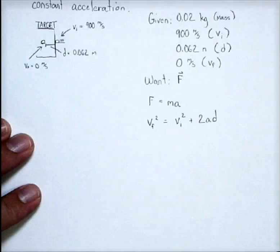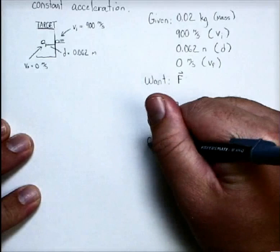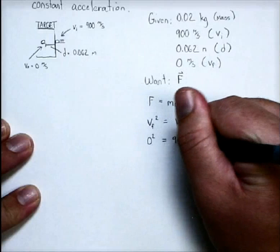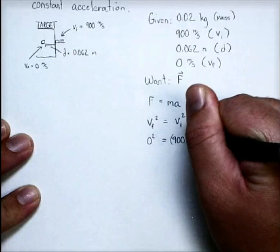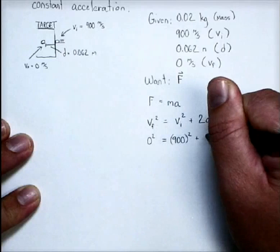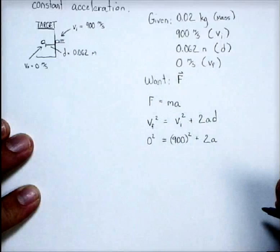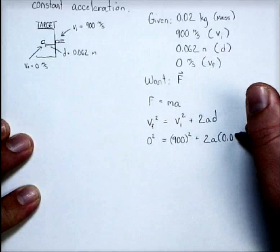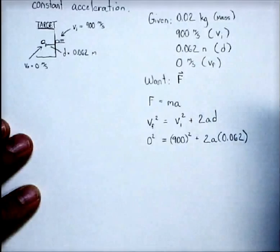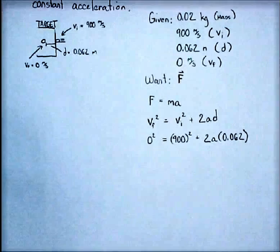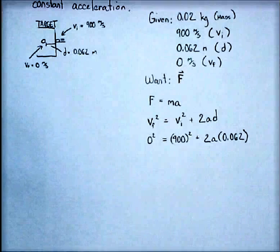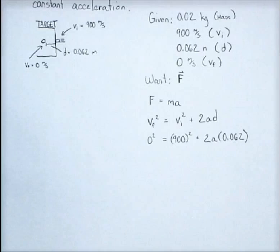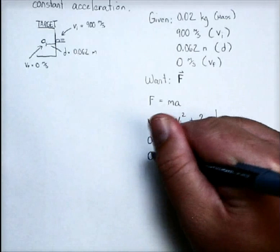Now, lucky for me, I know most of those. I know my final velocity is zero. So I have that squared. I know my initial velocity is 900. We can't forget to square that, plus two times the acceleration, which has a value of something, and our displacement of 0.062. And so now it's just a matter of solving all of this and finding out what our acceleration is. So we have 900 squared. Let's go ahead and get that out of the way.